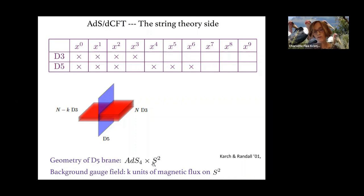The geometry of the D5-brane is AdS4 × S2. There is a background gauge field with k units of magnetic flux on the sphere, so k of the D3-branes get dissolved in the D5-brane. As a result, N D3-branes emerge on one side of the D5-brane but only N-k on the other side, reflecting the difference in the rank of the gauge group.